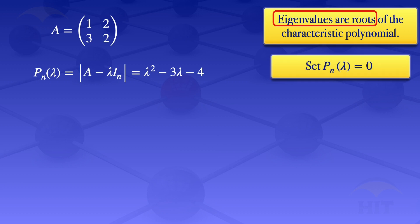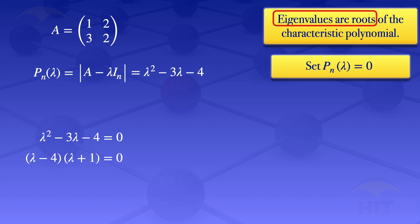To do that, we set P(lambda) equal to 0, giving us lambda squared minus 3 lambda minus 4 equals 0. That is just a quadratic, and to solve it we look for factors — two numbers that multiply to give minus 4 and add to give minus 3. Those numbers are minus 4 and 1, so we factorize to (lambda minus 4)(lambda plus 1) equals 0, giving lambda₁ equals 4 and lambda₂ equals minus 1.